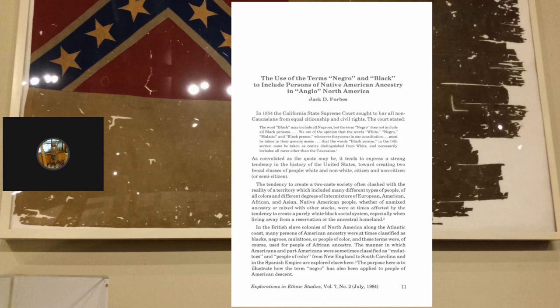We're gonna start with Jack D. Forbes on the use of the terms 'negro' and 'black' to include persons of Native American ancestry in Anglo North America. In 1854 the California State Supreme Court sought to bar all non-Caucasians from equal citizenship and civil rights. The court stated the word 'black' may include all negroes, but the term 'negro' does not include all black persons. The words 'white, negro, mulatto, and black person' in our constitution must be taken in their generic sense — 'black person' must be taken as contra-distinguished from white, and necessarily includes all races other than Caucasian.